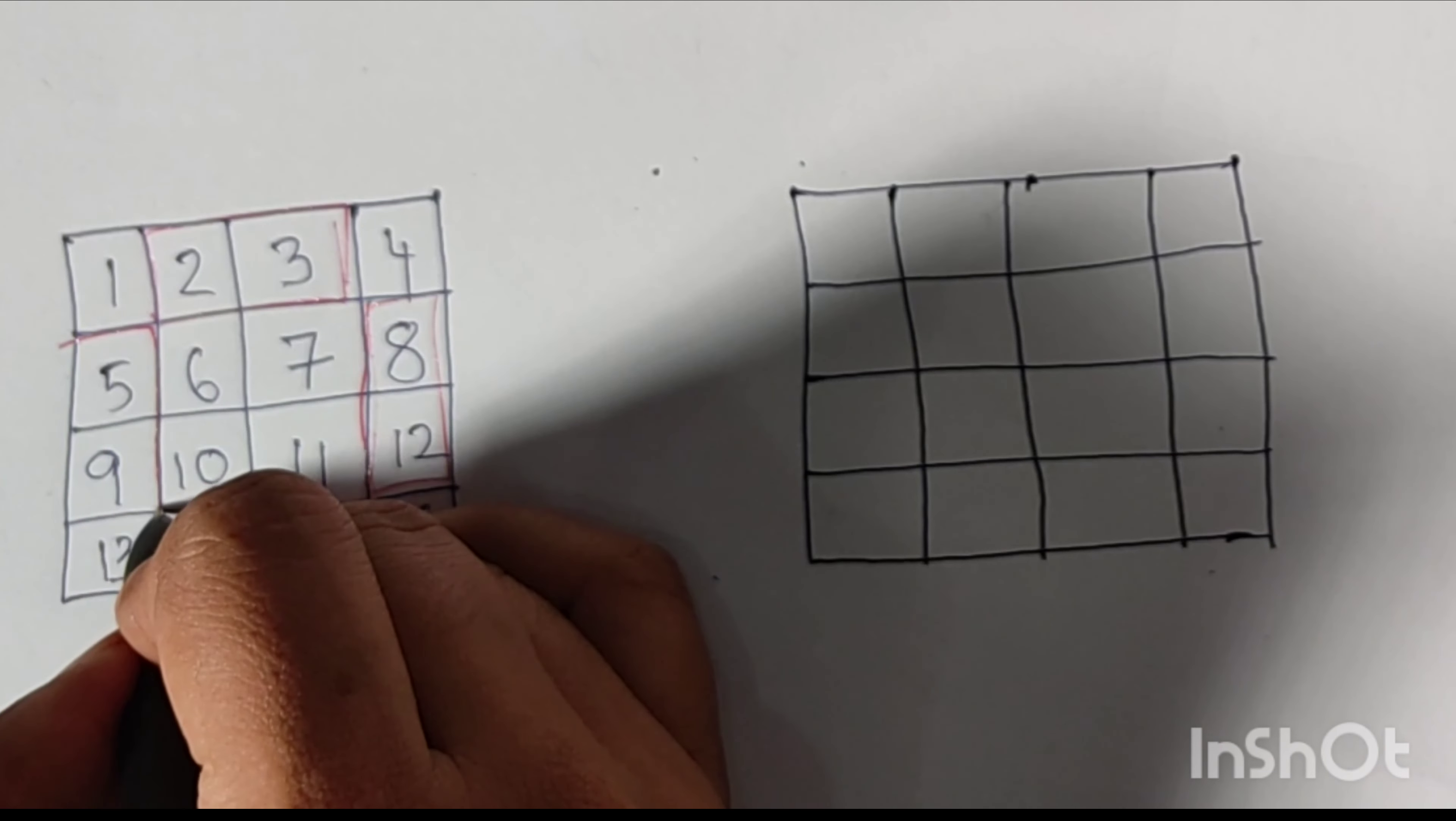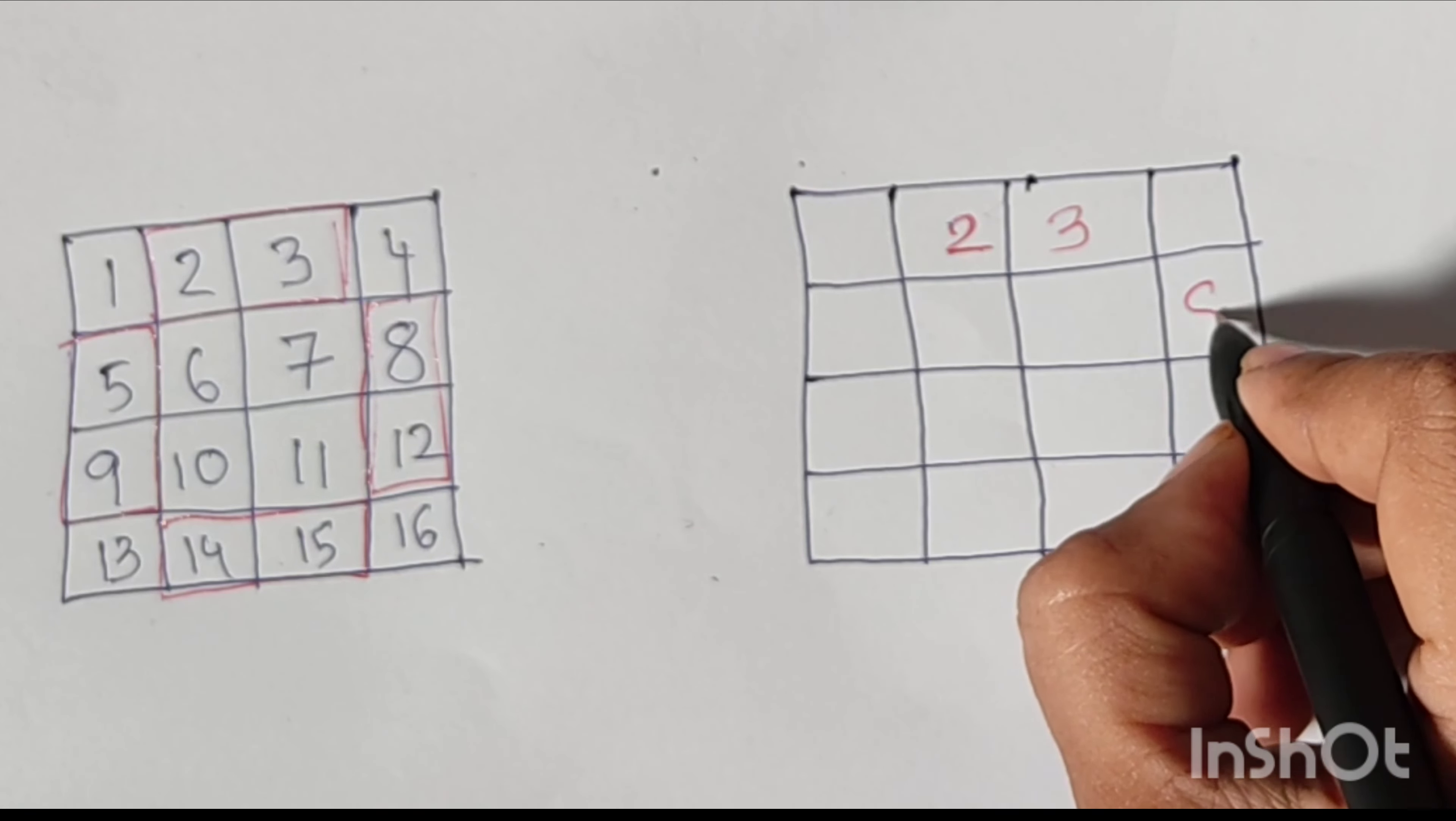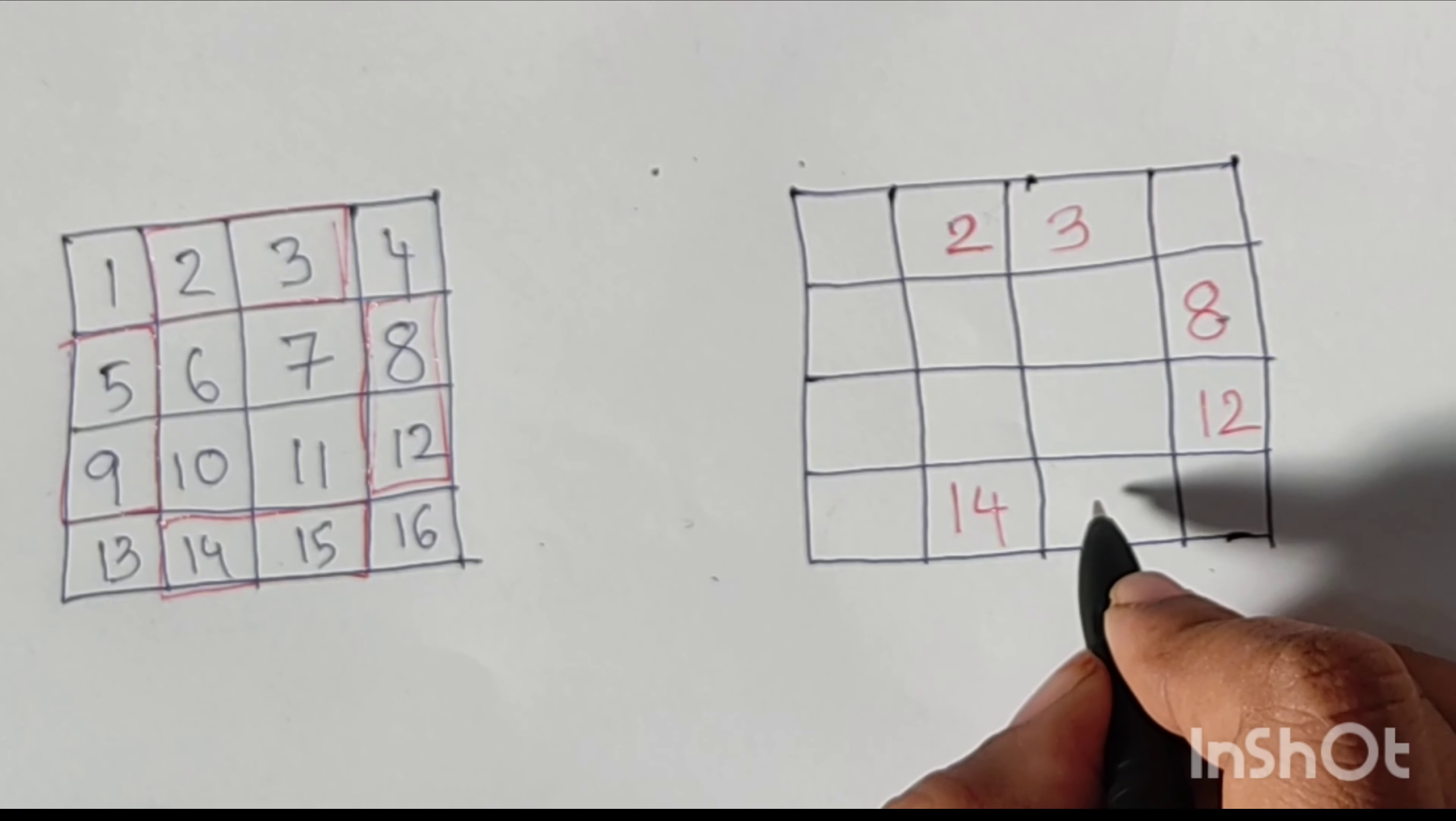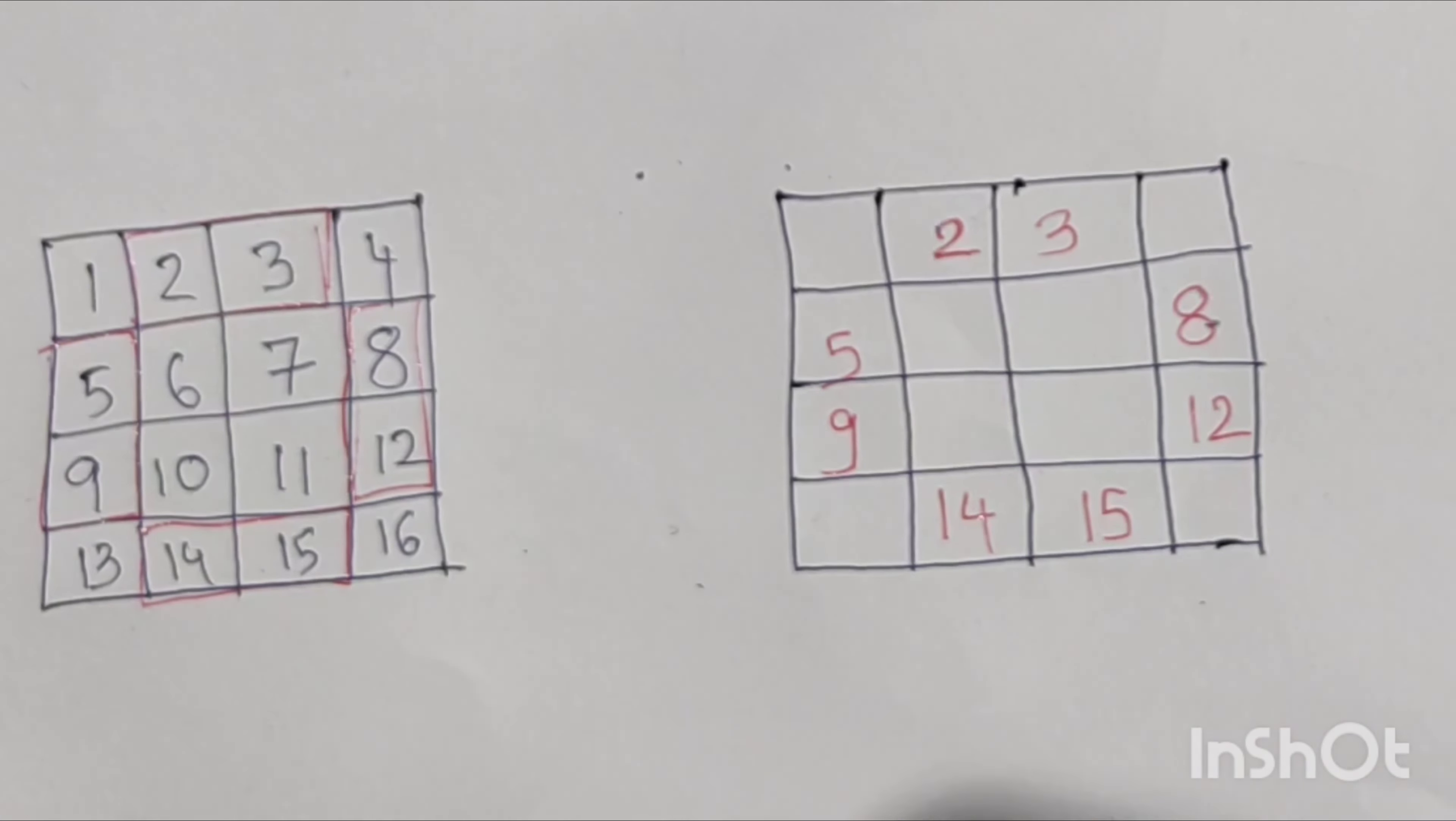Then copy the numbers from the middle boxes of the big square to the other square like 2, 3, 8, 12, 14, 15, 5, 9. So copy these numbers from that square to this square.